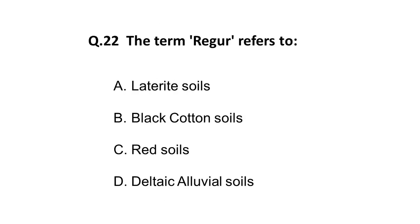The next question from the people and environment section: the term 'Regur' refers to — option A is laterite soils, option B is black cotton soils, option C is red soil, option D is deltaic alluvial soil. The correct answer is black cotton soil.